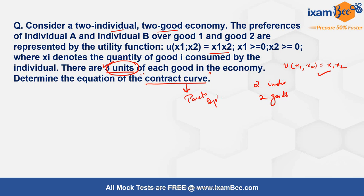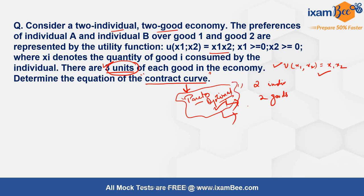Pareto optimal allocations are those where any redistribution that benefits one individual will not benefit the other. It is not the case that both individuals can benefit simultaneously from a redistribution. Points satisfying this condition are Pareto optimal, and together they give you the contract curve.